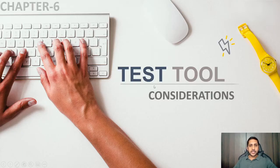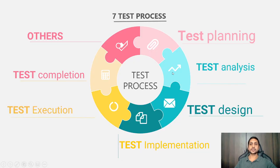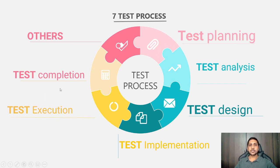The first topic is test tool consideration — when we select any tool for testing, what things should we consider? In the first chapter on fundamentals of testing, we saw there are seven test processes: test planning, test analysis, test design, test implementation, test execution, test completion, and some other activities. Now we will see what tools we can use in each of these processes.